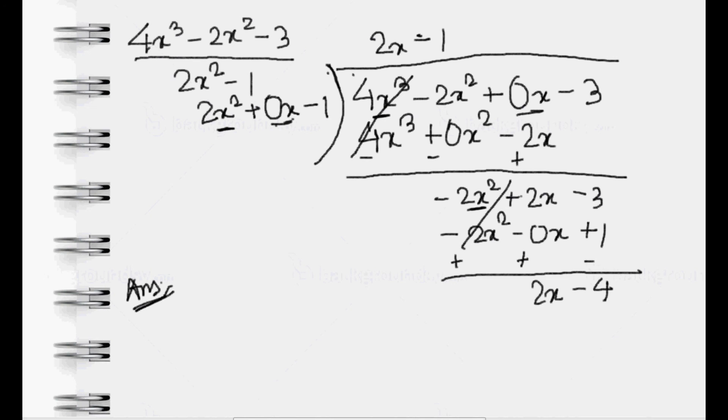The answer would be 2x - 1, but there is a remainder. So we have to add the remainder in the answer. How to add the remainder? Remainder means we cannot divide it with the divisor anymore: (2x - 4) divided by (2x² - 1). That's all for now.